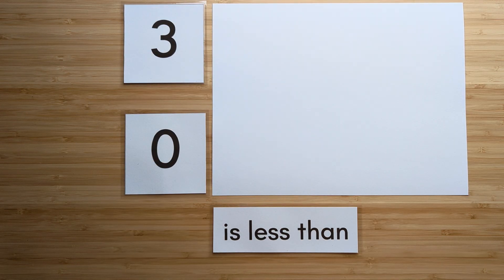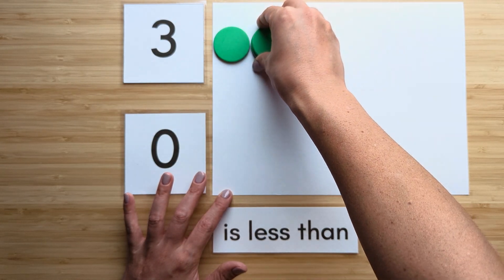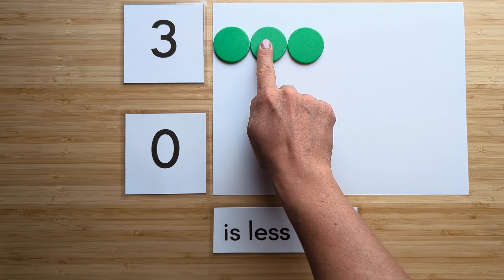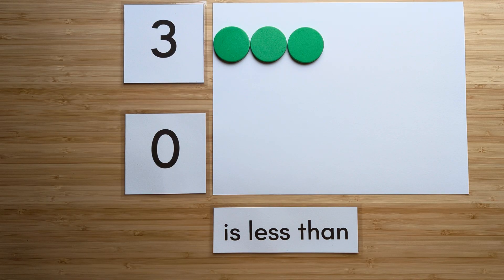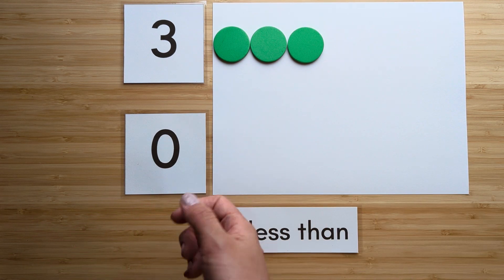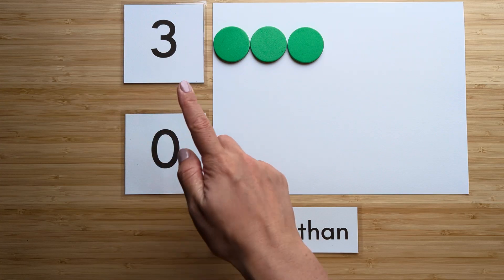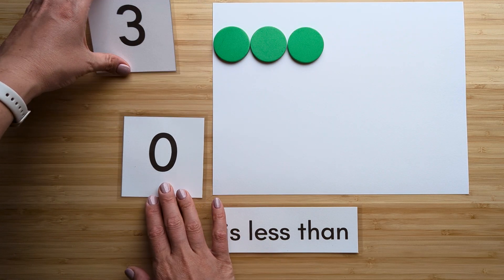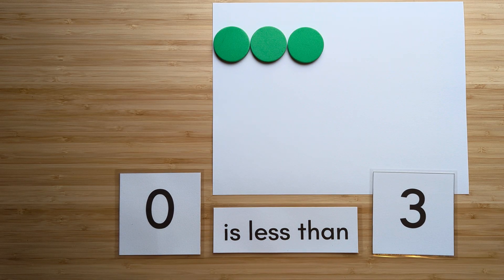Make the number three. Point and count: one, two, three. Make the number zero. Now let's compare. Match them up. There's nothing to match up with zero because there's nothing there. So which one has extra? Three has extra. Zero is less than three. Nice job. Clear off your boards to try the next one.